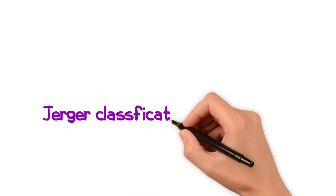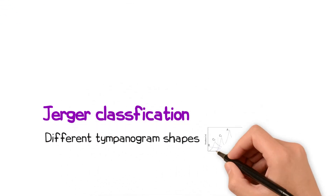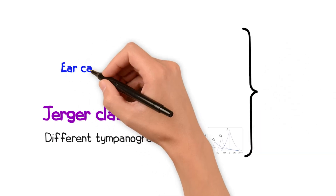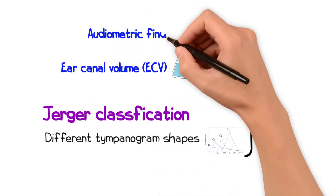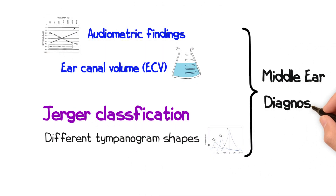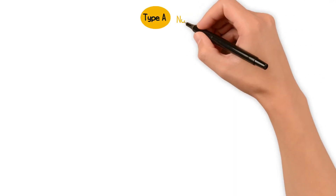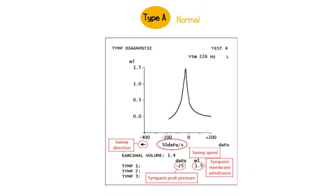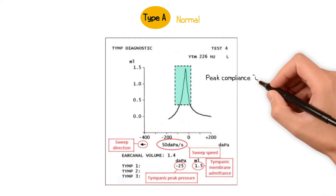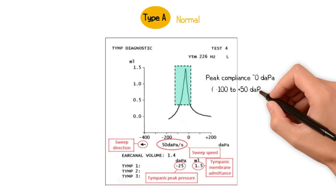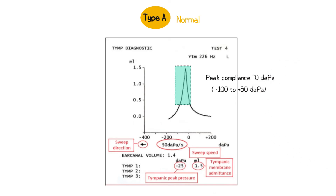The Jerger classification describes different shapes of tympanograms which, together with the ear canal volume and audiometric findings, can help diagnose middle ear pathology. Traces can be classified as type A, B, or C, each with their own subtypes. A type A trace is a normal result where the peak compliance occurs at 0 decapascals, which is atmospheric pressure, with a sharp decrease on either side, indicating normal middle ear pressure and mobility of the tympanic membrane.